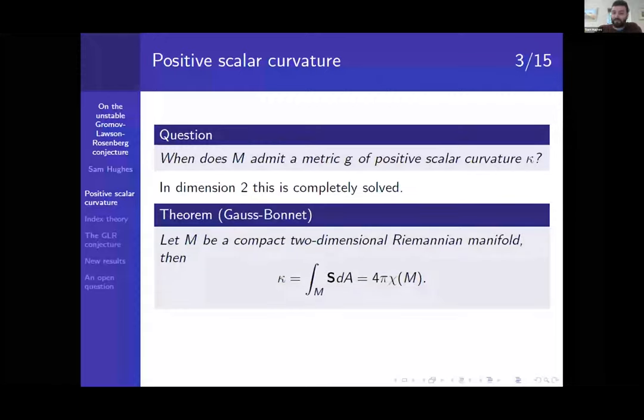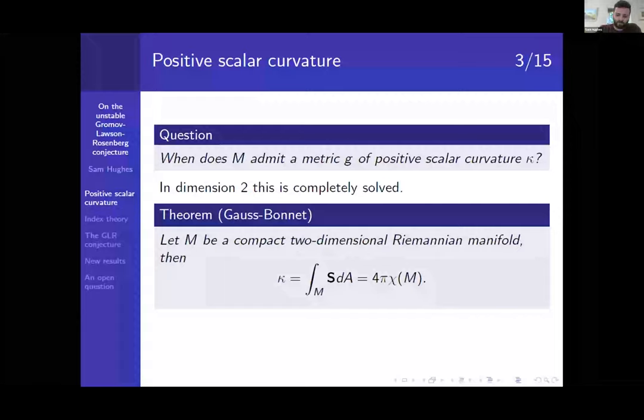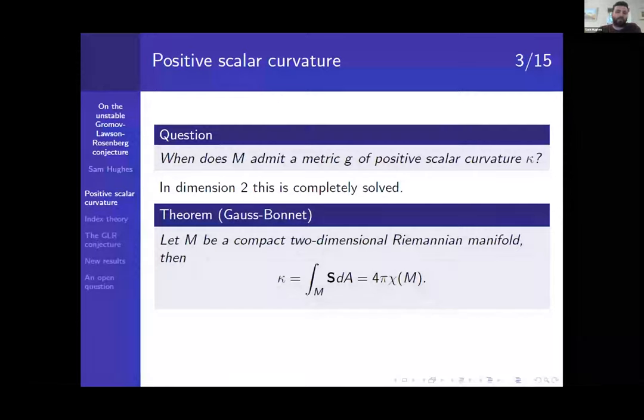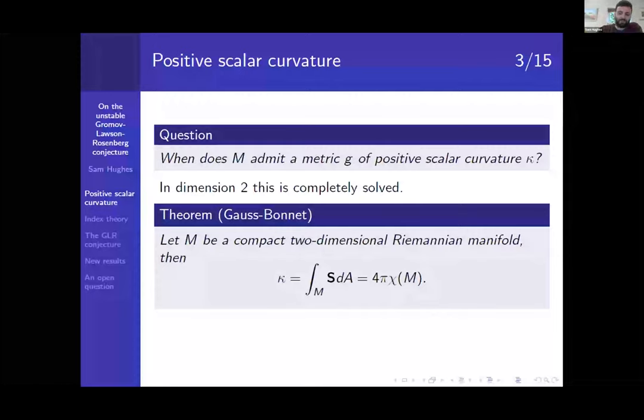Okay, so in dimension two, this is actually completely solved. So if we go all the way back to Gauss-Bonnet, the Gauss-Bonnet theorem, if M is a compact surface, then the scalar curvature is equal to four pi times the Euler characteristic. And this is possibly quite surprising, because the Euler characteristic is a topological feature of a space rather than a geometric feature, because scalar curvature is definitely something out of differential geometry.